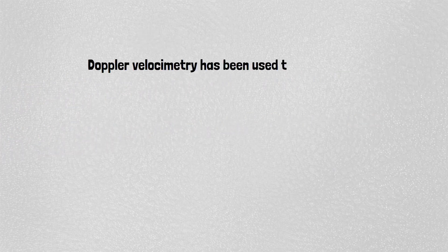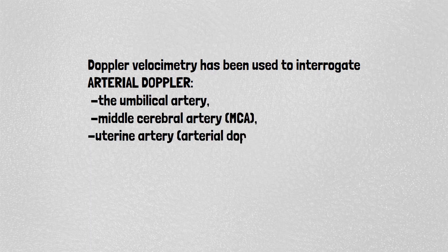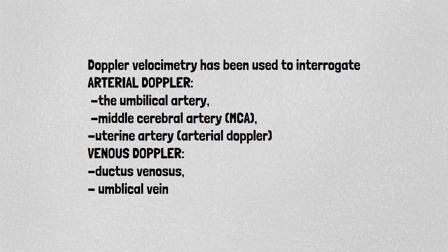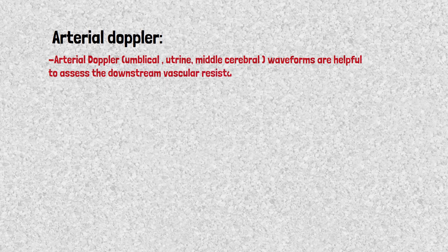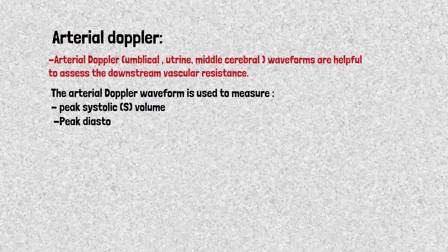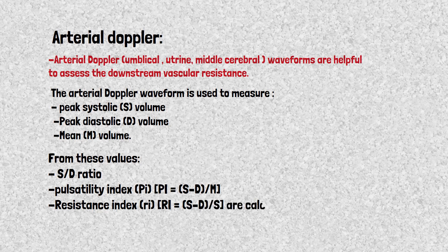Doppler velocimetry interrogates arterial and venous Doppler. In arterial Doppler: umbilical artery, middle cerebral artery, and uterine artery. In venous Doppler: ductus venosus and umbilical vein. Arterial Doppler waveforms of the umbilical, uterine, and middle cerebral vessels help assess downstream vascular resistance. The waveform measures peak systolic, peak diastolic, and mean volume. From these, the S/D ratio, pulsatility index (PI = S minus D divided by M), and resistance index (RI = S minus D divided by S) are calculated.